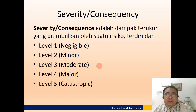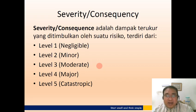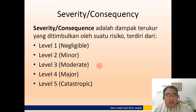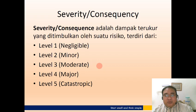Dalam konteks severity, kita mengenal ada lima level dampak dari sebuah resiko. Yang pertama, paling ringan, disebut sebagai neglectable atau bisa diabaikan. Level 2 adalah minor. Level 3 adalah moderate atau sedang. Level 4 adalah major atau cukup berat. Dan level 5 adalah catastrophic — menghancurkan atau membuat proyek hancur.